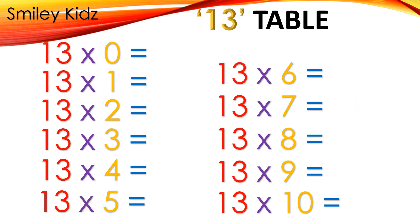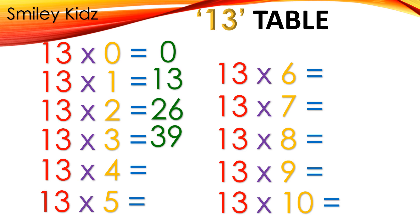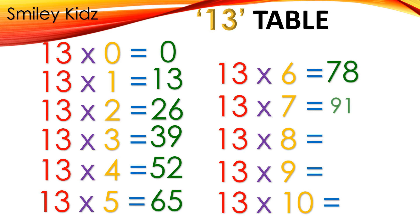Table 13: 13×0=0, 13×1=13, 13×2=26, 13×3=39, 13×4=52, 13×5=65, 13×6=78, 13×7=91, 13×8=104, 13×9=117.